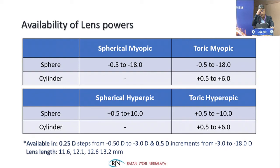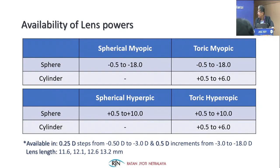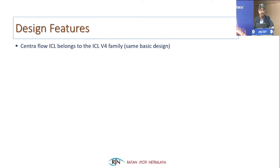ICLs are available in spherical power from -0.5 to -18 diopters, with toric correction of +0.5 to +6 diopters, and in hyperopic range from +0.5 to +10 diopters. They come in steps of 0.25 diopters from -0.5 to -3 diopters and in steps of 0.5 diopters from -3 to -18 diopters. Lens sizes available are 11.6 (rarely used), 12.1, 12.6, and 13.2 — the maximally used sizes.